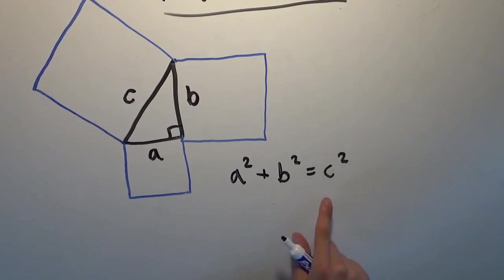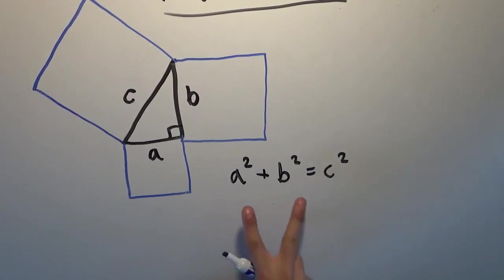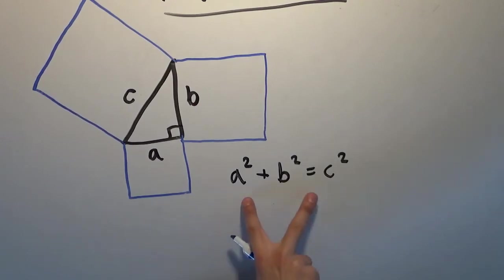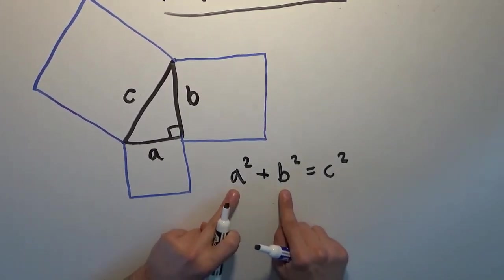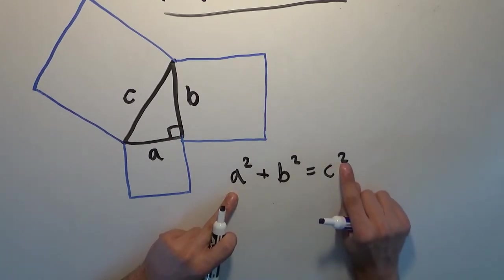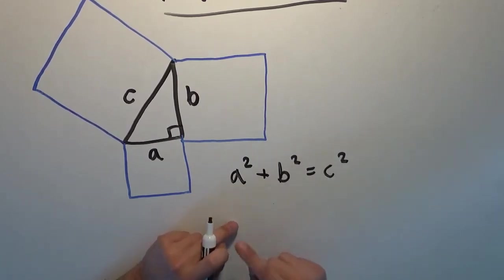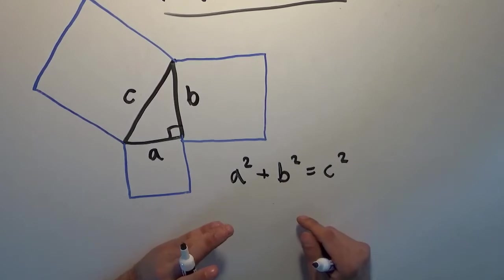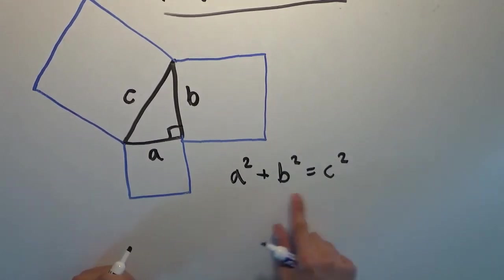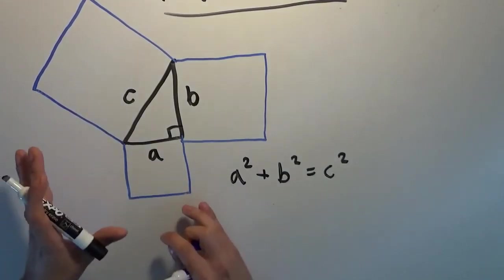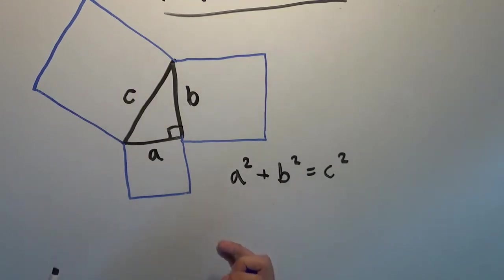Now, if this is true, what this allows you to do is: if you know any two of the sides of a right triangle, you can find out the third. Because if you know any two, you just plug them in and solve for the third. If you don't know C, you plug the two numbers in, square them, and take the square root. Or you simply subtract one of them over and do the same thing. So if you know both legs, or one leg and the hypotenuse, you can find the third side — if this is true. And I'm not just going to leave this here; this seems like a non-obvious thing to say, so I'm going to prove it.